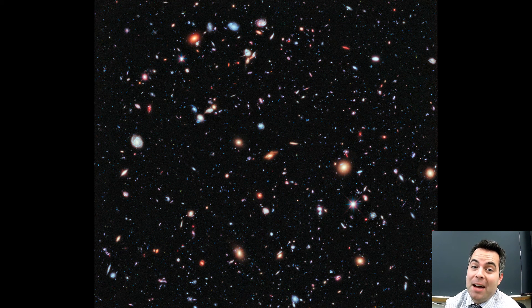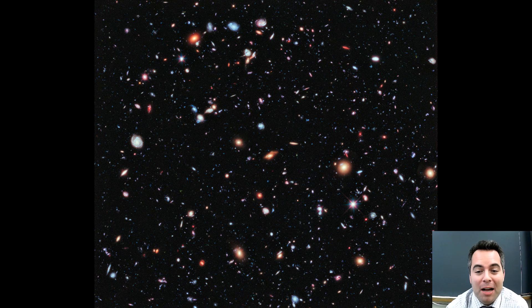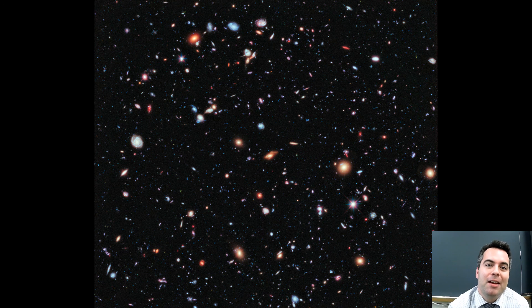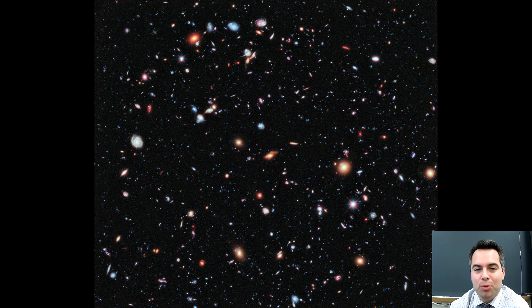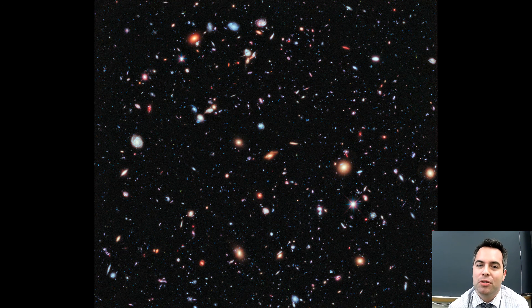That tiny patch contained over 5,000 galaxies — meaning you're possibly looking at trillions of planets. I'll leave you with a quote by Arthur C. Clarke that was on a poster in my physics teacher's classroom: 'Two possibilities exist — either we are alone in the universe, or we are not. Both are equally terrifying.' Have a great day.